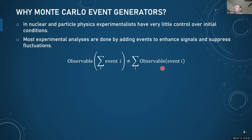So why Monte Carlo event generators? If you talk to people outside of heavy ion physics or outside nuclear and particle physics, they might be surprised by this concept of an event generator. It probably has to do with the fact that experimentalists in other fields typically have much better control over what they do in their labs. We have very little control besides dialing the energy of the accelerator and choosing which nucleus or which particles we put in. So there's a lot of room for fluctuations — not a single event is really like any other event from a heavy ion collision. It's a very fluctuation-dominant business.